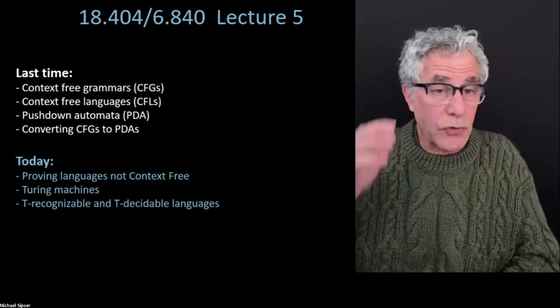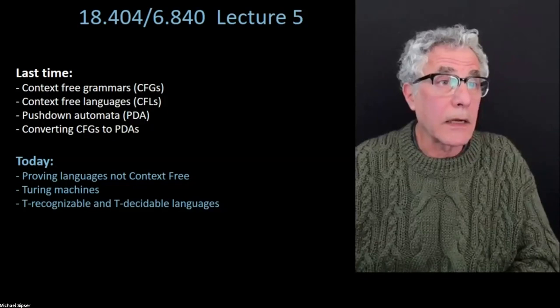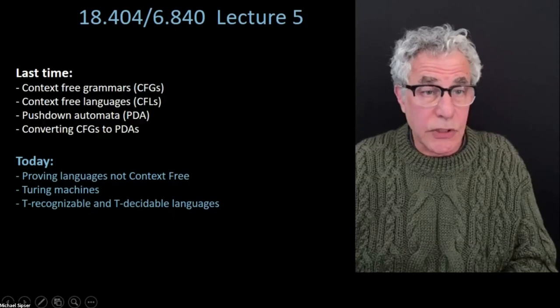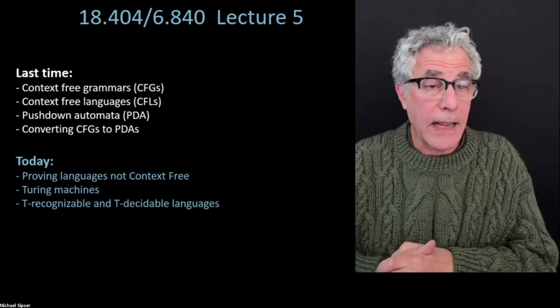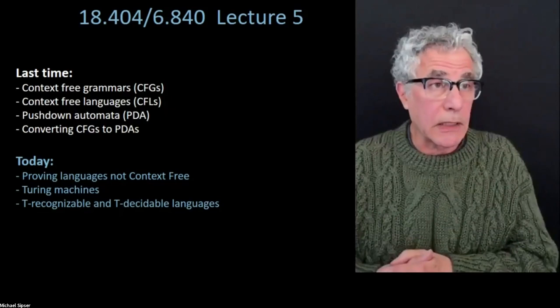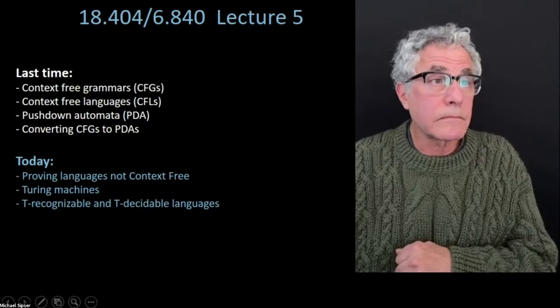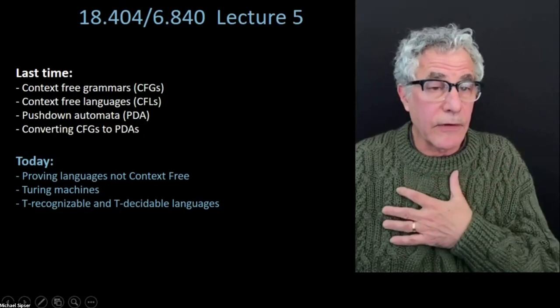Today we're going to show a technique analogous to the one we used for proving that languages are not regular, but this time for proving languages are not context-free. The pushdown automata and the grammar still have their limitations in terms of what we normally think a computer can do, and with that we'll use that as a lead-in to our general purpose model: the Turing machine.